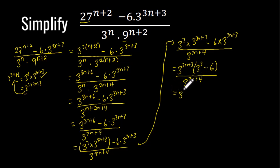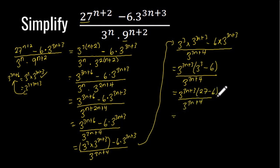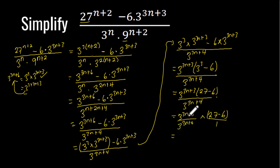This is the same as 3 exponent (3n+3) times (27 minus 6), divided by 3 exponent (3n+4). We can separate the fraction as 3 exponent (3n+3) divided by 3 exponent (3n+4), times (27 minus 6) divided by 1. Since these are the same base being divided, we subtract the exponents, giving 3 exponent (3n+3 minus (3n+4)) times 21, since 27 minus 6 is 21.